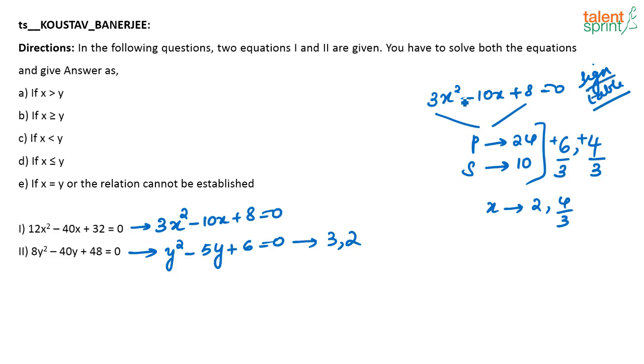When the coefficient before the bx term is negative and the c term, right, it is positive. See, if the equation of this form ax² - bx + c = 0, then both the roots are positive. Okay, so here both the roots will be positive. So this is using the sign table. I hope all of you know that. So these are the values of x.